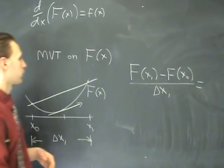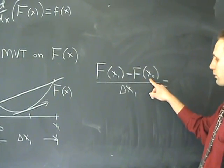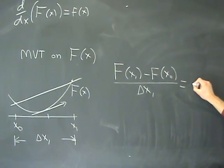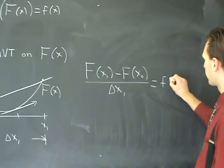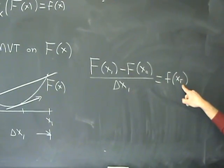Symbolically, we have big F of x₁ minus big F of x₀, the change in y, divided by the change in x, equals the derivative, which we'll say is little f of—I'm going to call it x₁ bar.